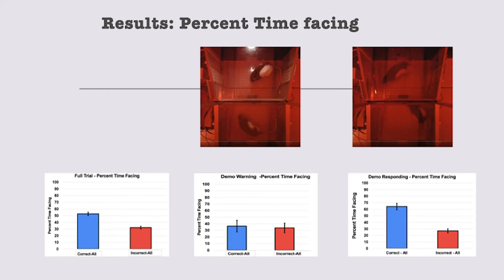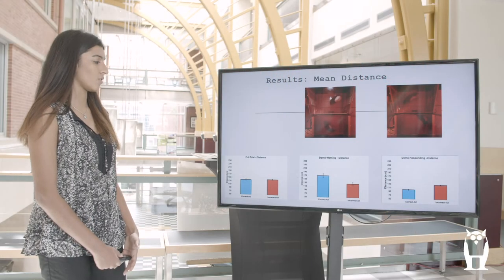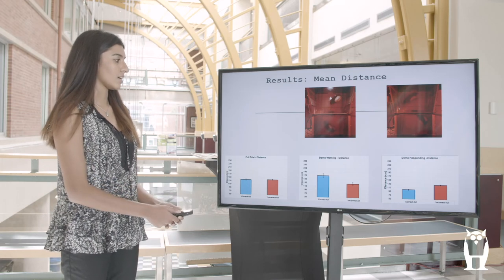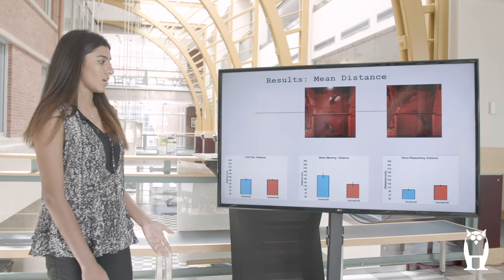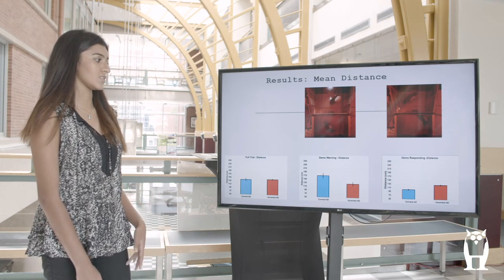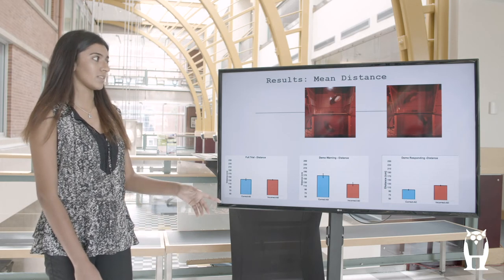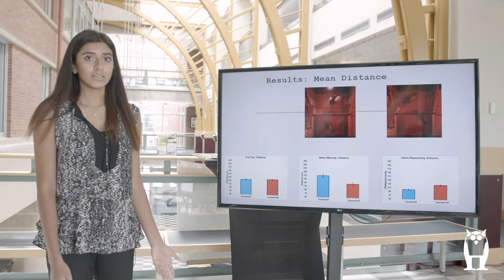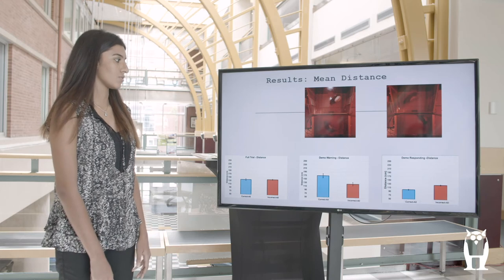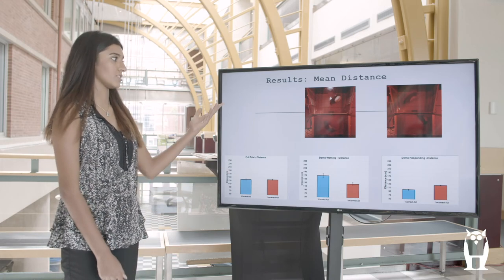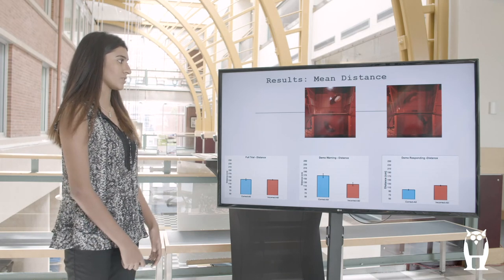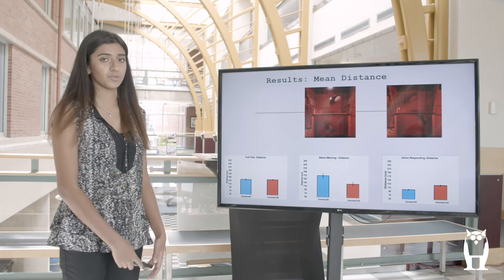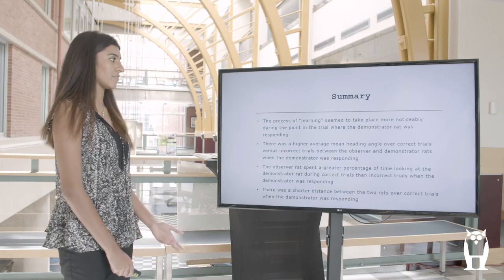Lastly, we have the mean distance. We found that on average across the entirety of the trial there was no difference between correct and incorrect trials in terms of distance between the two rats. This is probably because before the demonstrator was starting to respond there was a much higher distance between the two rats in correct trials and a lower distance in incorrect trials, which was not what we expected. But when the demonstrator rat had actually started to respond there was a smaller distance in correct trials and a larger distance in incorrect trials. We can see in the images that the rats are much further apart before the light turns on, but once the rat begins to respond the observer rat starts to come closer in order to observe the demonstrator rat.